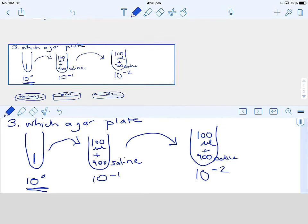Our next tube has 900 microliters of saline. We take 100 microliters from our first tube and put it into our second tube. So our second tube has 100 microliters and 900 microliters of saline. That is a 10 to the minus 1 dilution.